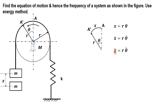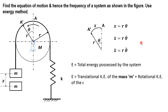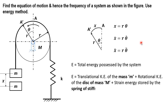The second derivative gives x double dot equals r theta double dot, where theta double dot is the angular acceleration in radians per second squared. Now let E be the total energy possessed by the system. It is equal to the translational kinetic energy of mass m, plus the rotational kinetic energy of the disk of mass M, plus the strain energy stored by the spring due to elongation and contraction, whose stiffness is k. Using this, we'll derive the frequency of vibration of the given spring-mass system.